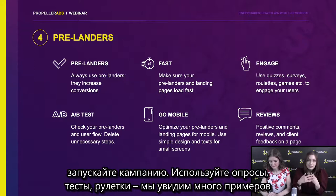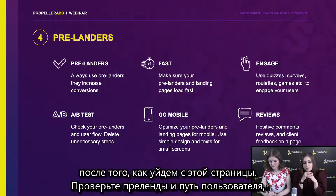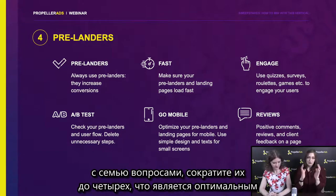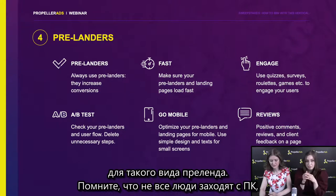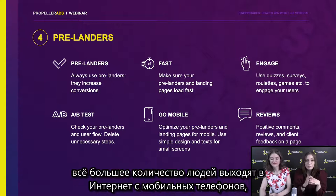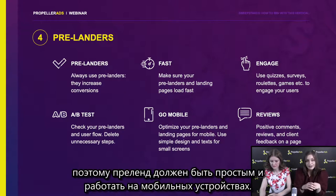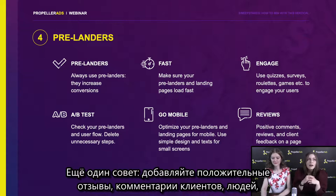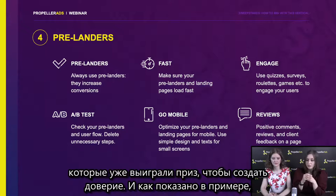Use quizzes, surveys, and roulettes. Check your pre-landers and user flow — delete unnecessary steps if you think they are inefficient. For example, if you have a questionnaire with seven questions, you might shorten it to four questions, which is an optimal decision for such pre-landers. Remember that more and more people are browsing the internet from mobile phones, so keep your pre-lander simple and make it adaptive to mobile devices. Also add positive reviews, comments, and client feedback from people who have already won the prize, in order to create the feeling of credibility.